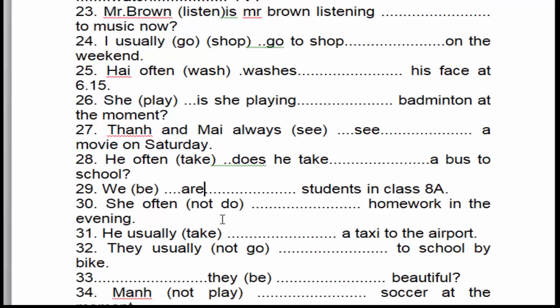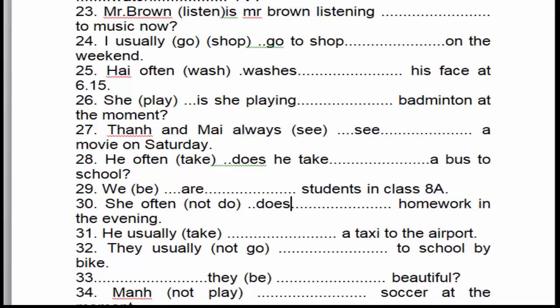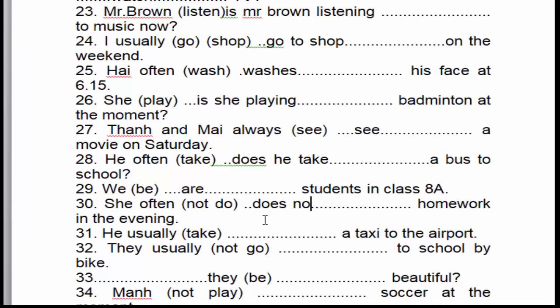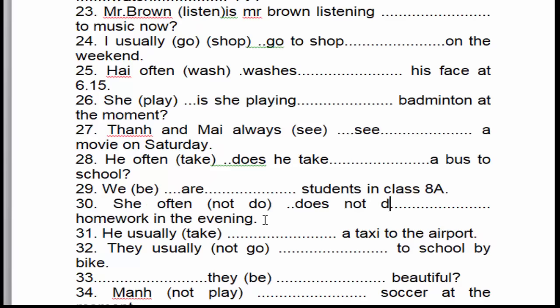Câu số 30: 'She often doesn't do homework in the evening.' Cô ấy thường không làm bài tập vào buổi tối. 'Often' là dấu hiệu nhận biết của thì hiện tại đơn, ở thể phủ định. 'She' là chủ ngữ số ít, cho nên chúng ta sử dụng 'doesn't', động từ để nguyên mẫu.